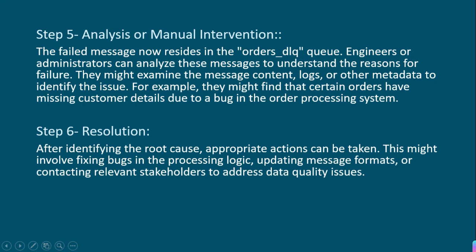After identifying the root cause — the producer team will go through the logs and find out what was missing — they will rectify that message and again send it to the actual orders topic. After identifying the root cause, appropriate action can be taken. This might involve fixing bugs in the processing logic, updating the message format, or contacting the relevant stakeholders to address data quality issues. They are going to fix that particular issue by fixing the code or by addressing other factors — this is essentially the resolution step.